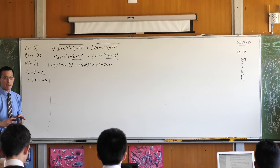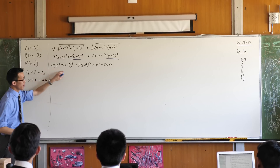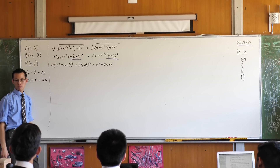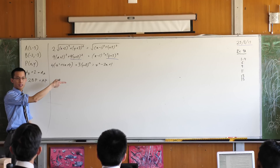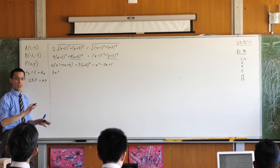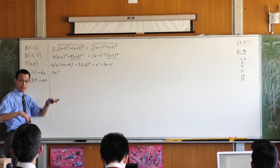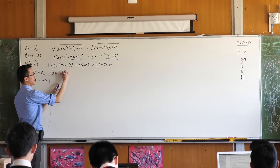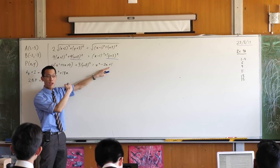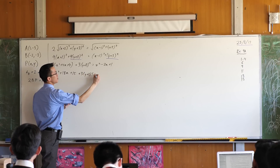Now this looks messy, but it's not impossible to deal with. I have four x-squared terms on the left and one on the right — when I balance things out I'll end up with three x-squared terms. For the x-to-the-1 terms, I have 16 on the left and negative 2 on the right, so when I add 2x to both sides I'll end up with 18x. And then 4 times 4 is 16, minus 1 gives 15 remaining as a constant.